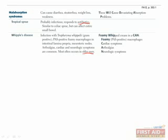Whipple's disease is a malabsorption syndrome typically seen in older men, caused by Tropheryma whipplei, which is a gram-positive organism. Biopsy specimens show PAS-positive foamy macrophages in the intestinal lamina propria and mesenteric nodes. In addition to the typical diarrhea, weight loss, and weakness, patients also have arthralgias or joint pains, and cardiac and neurologic symptoms. The mnemonic on the right highlights the major symptoms as well as the histological finding of PAS-positive macrophages.